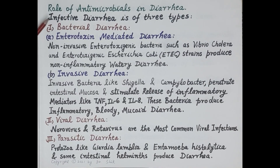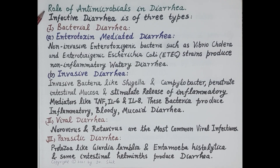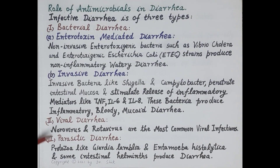Hello students. In today's video on anti-diarrheals part 4, we will discuss the role of antimicrobials in diarrhea. Acute diarrhea is usually infectious, while chronic diarrhea is non-infectious and not usually caused by microorganisms. There are three types of infectious diarrhea: bacterial diarrhea, viral diarrhea, and parasitic diarrhea.